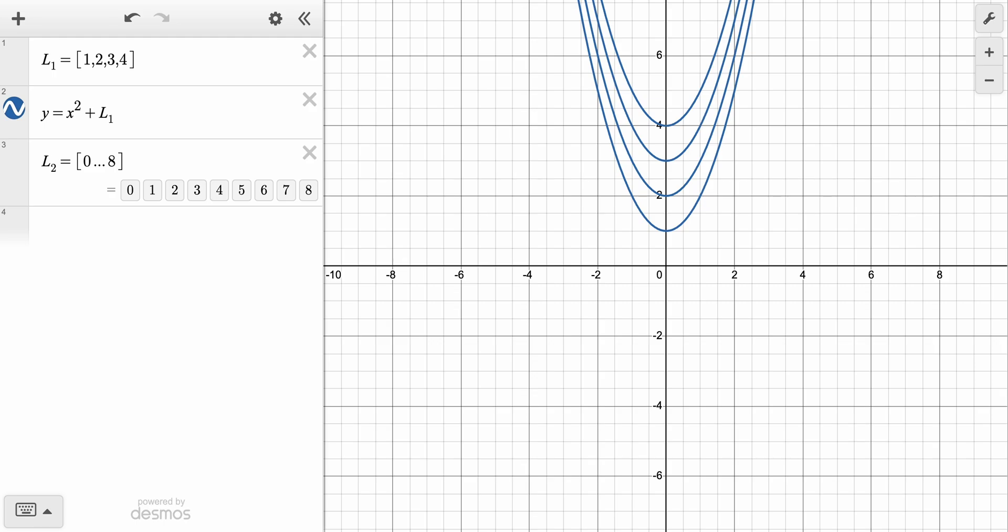We can also change the increment between the elements in the list. Let's say you want to generate a list that starts at 10 and counts by 5s up to 95. Open the square brackets and start at 10. Add a comma and then enter 15 to tell the calculator we want to count by 5s.